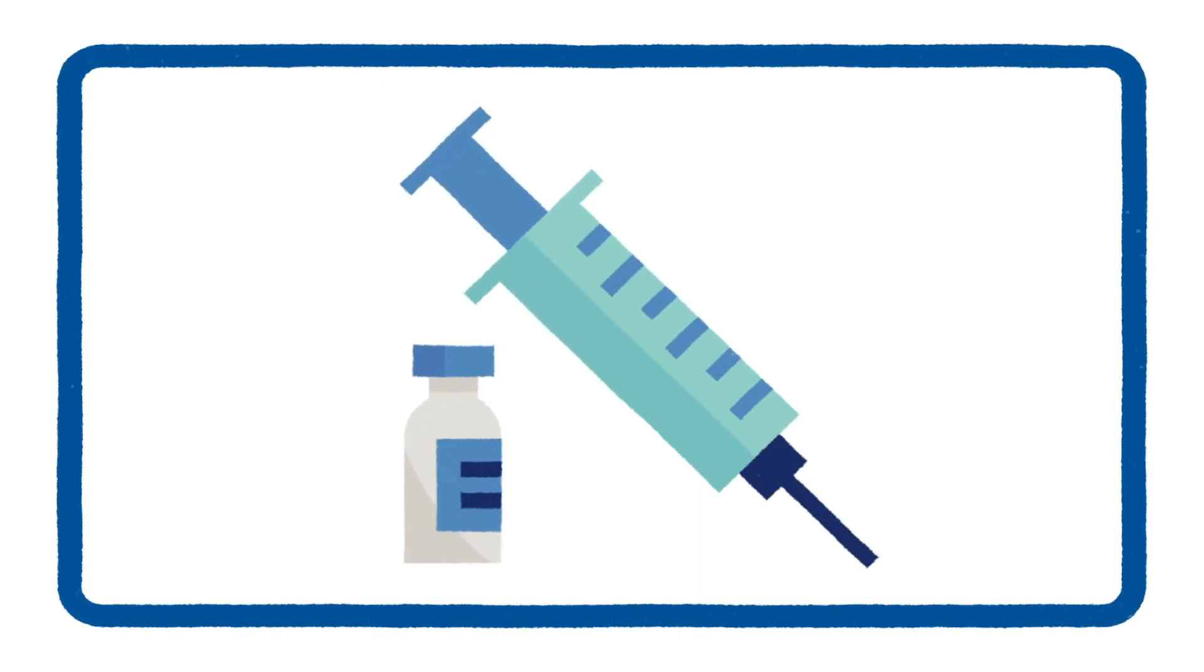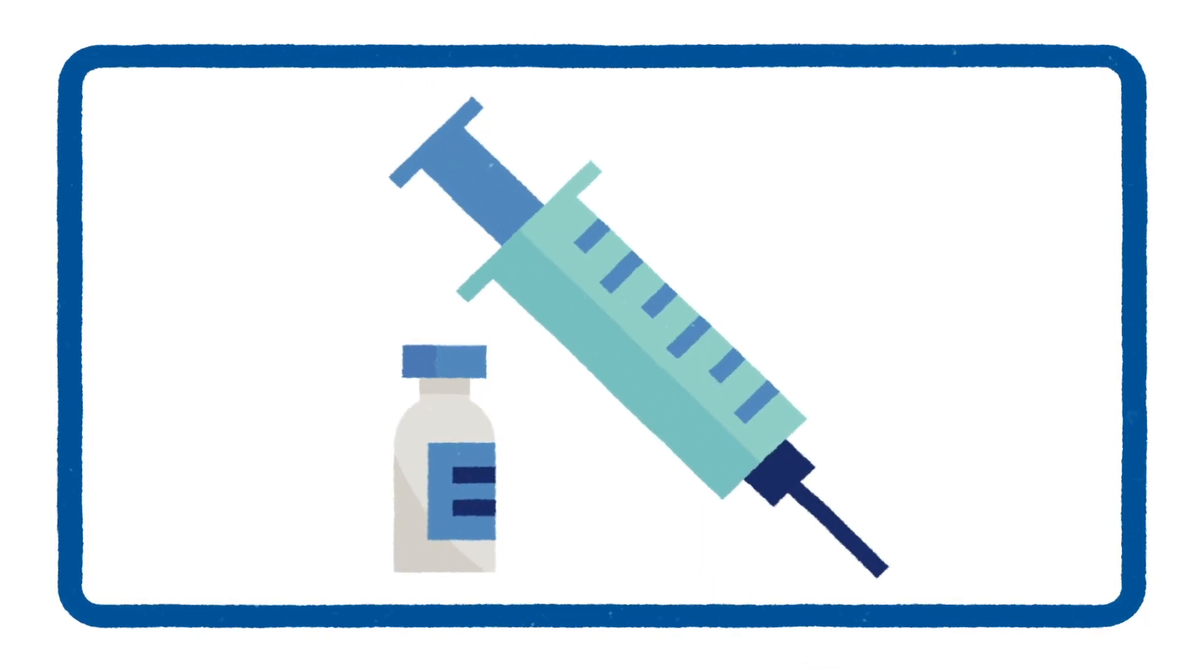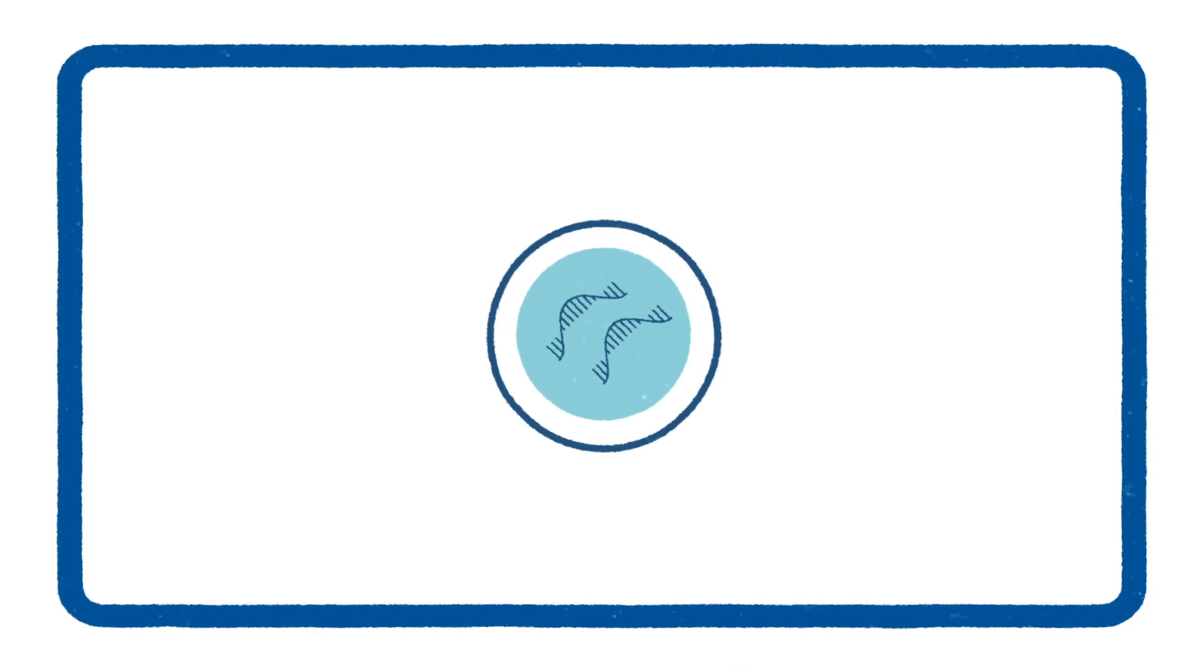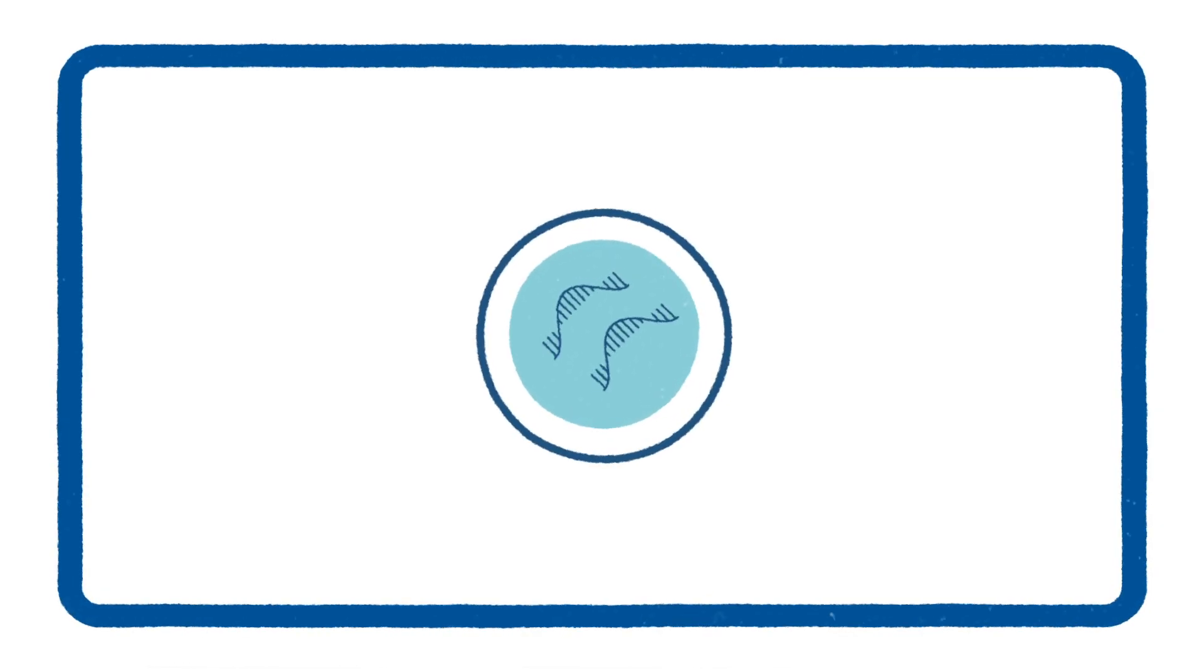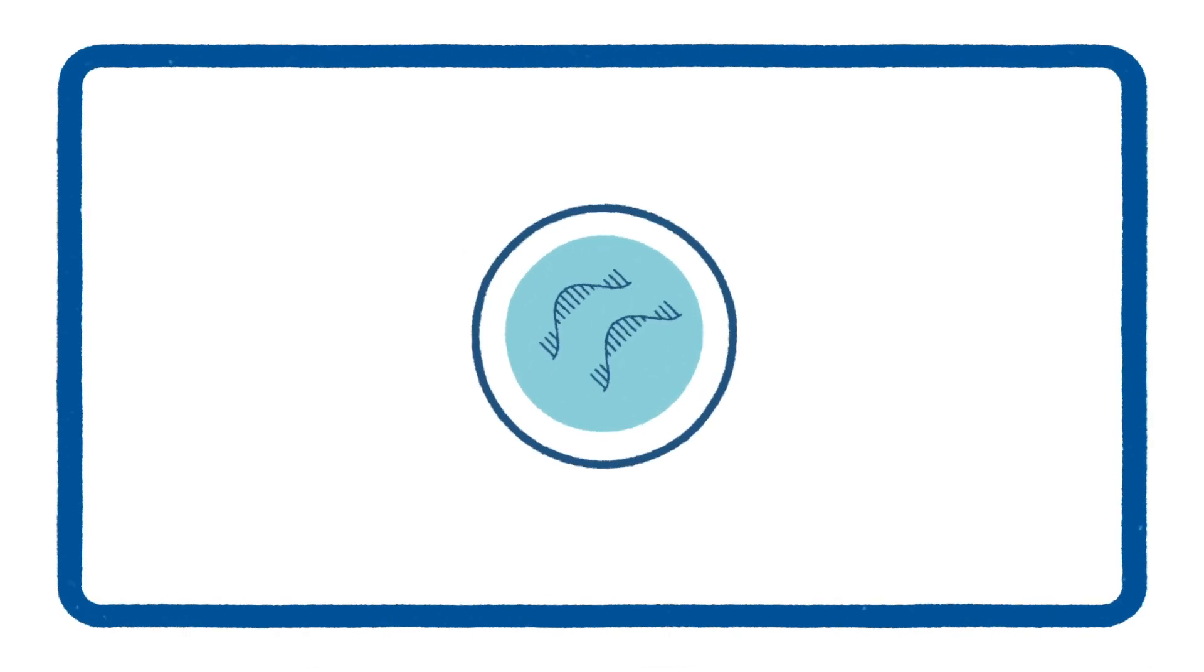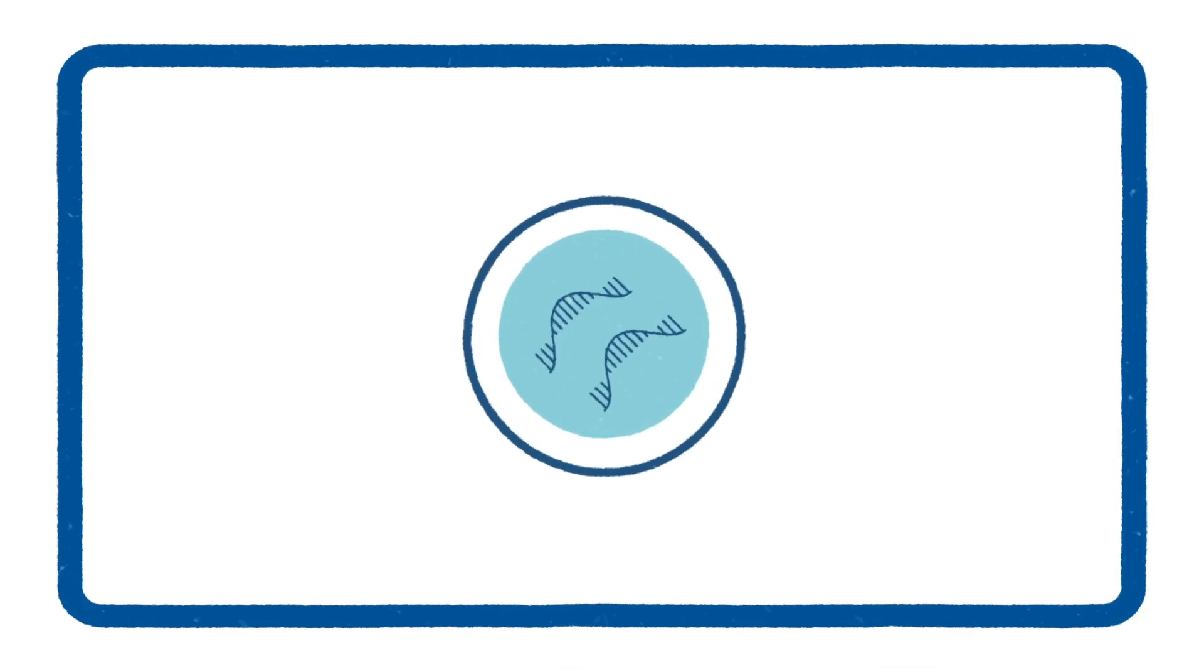mRNA vaccines work slightly differently with the same goal. mRNA vaccines provide a blueprint that temporarily teaches our bodies how to make these viral fragments. This blueprint is temporary and doesn't stay in the body. It breaks down and is cleared by the body over time.